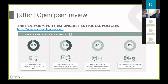Looking at data on acceptance of open peer review policies—for instance, review reports that are publicly accessible, which is just one element of OPR—it's basically about one percent of the journals represented in this platform. But OPR is still coming, and from the literature it appears to be coming quickly.